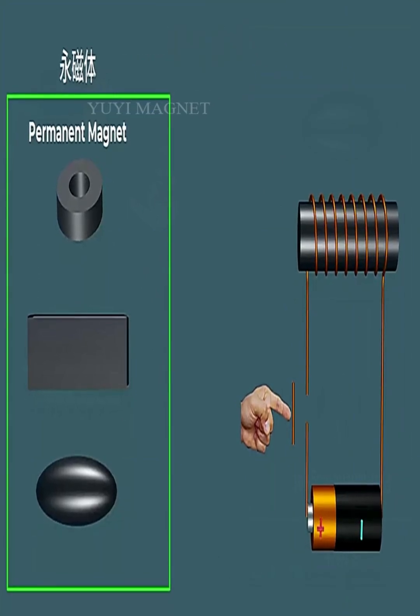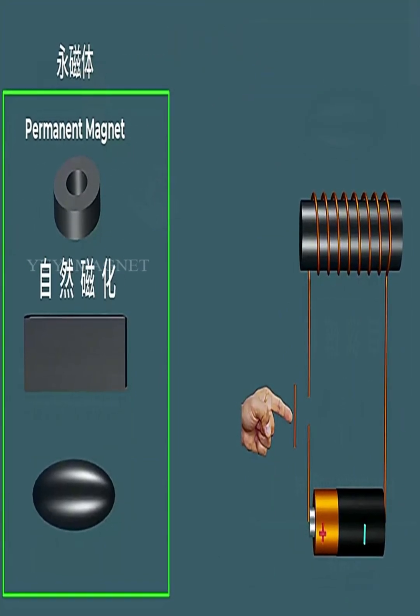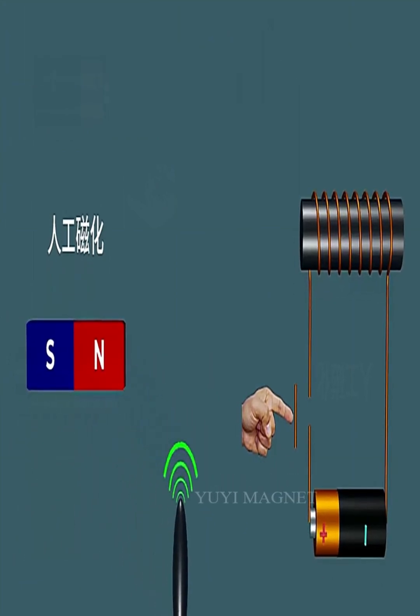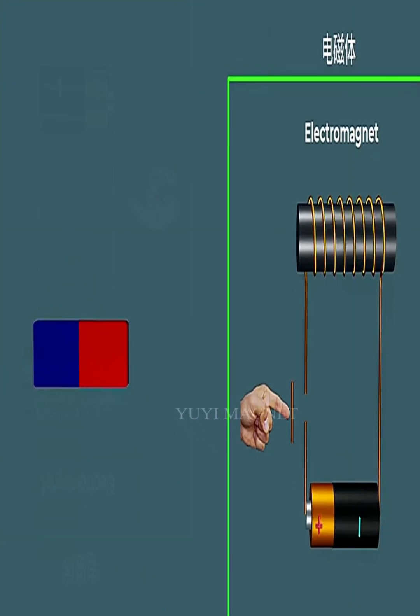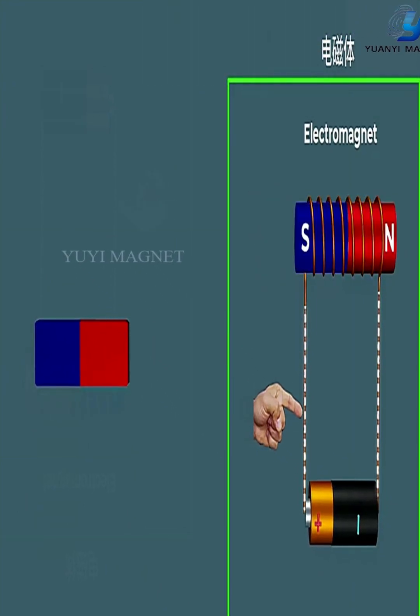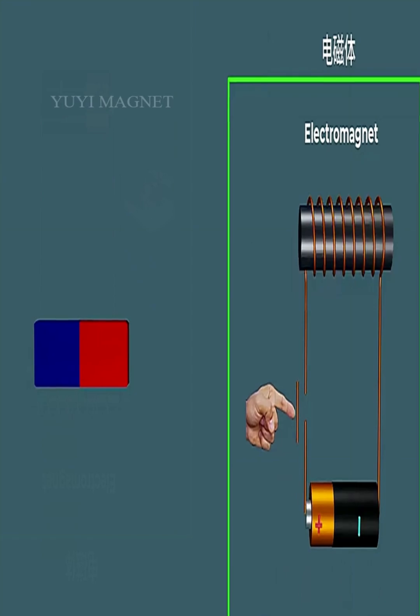A magnetic body is a material or object that can systematically create a magnetic field. It has a mysterious force that can attract or repel other magnetic materials.